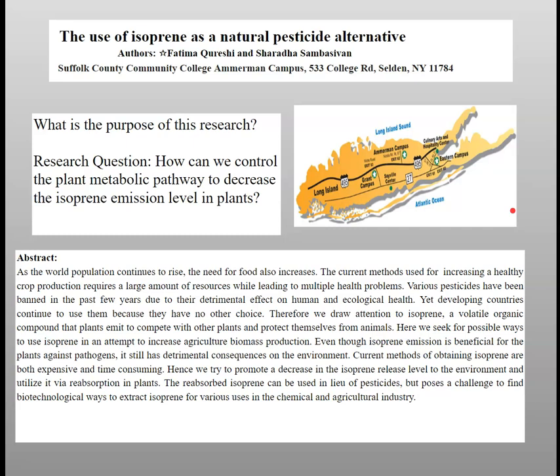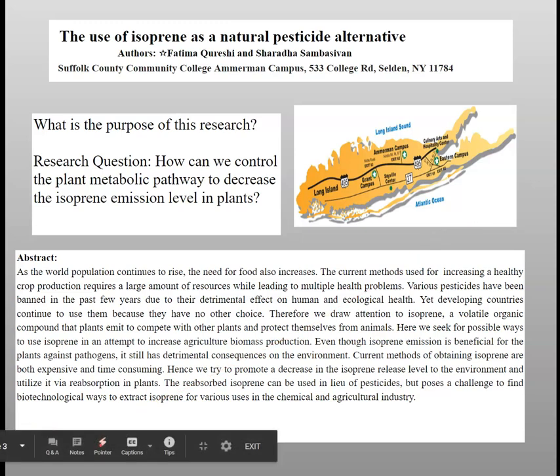To begin, what is the purpose of this research? The purpose of this research is to raise awareness about isoprene emission. Isoprene is a volatile organic compound. Volatile organic compounds are chemicals that plants release to attract pollinators, allure seed-dispersing animals, signal predators against herbivores, and enable plant inter- and intra-communication. The research question is: how can we control the plant metabolic pathway to decrease the isoprene emission level in plants? We want to decrease isoprene emission because it is harmful for the environment, yet effective for the plant itself. So we want to create a system in which the plant can use it as a pesticide, but it doesn't release into the environment.